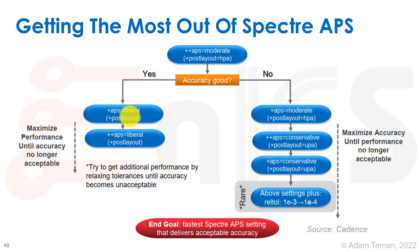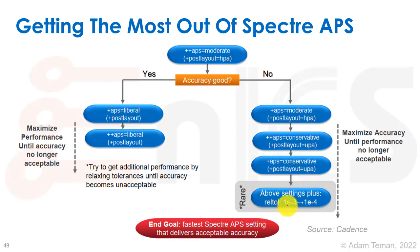If accuracy is good, you can keep going. You can get better performance using +APS with liberal or ++APS with liberal. Or you can fall down into +APS=moderate for better accuracy, and ++APS=conservative or +APS=conservative. You can also change the reltol and so forth. For most cases, just use ++APS with the default moderate setting. If you're using post layout, add +post layout and the default will be HPA.